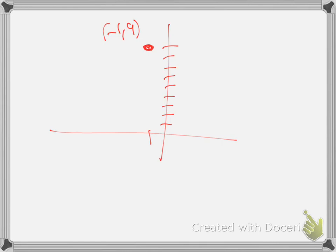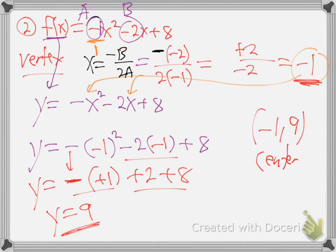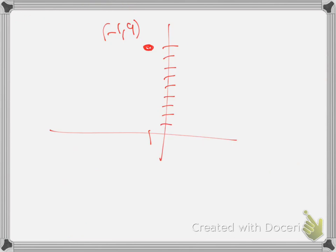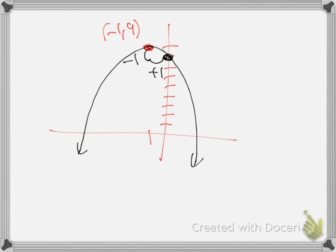Now we've got to find the x-intercepts. How do we find x-intercepts? Intercepts is always opposite letter zero. To find x-intercepts, make y zero. To find y-intercepts, make x zero. It always is opposite letter zero - that's how we find intercepts. So to find x-intercepts, make y zero. Go back to the same original equation and make y zero.